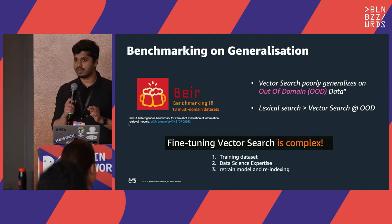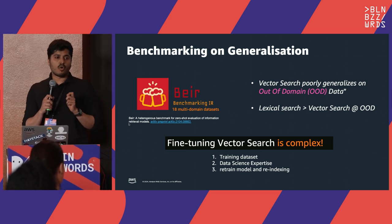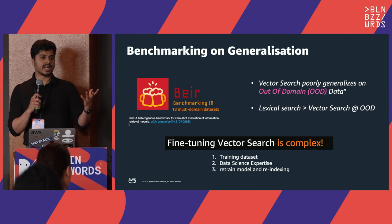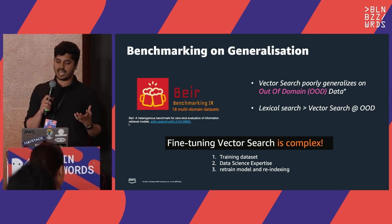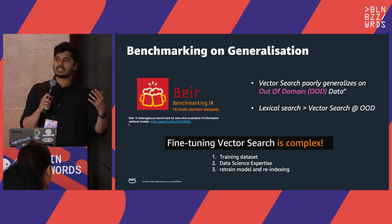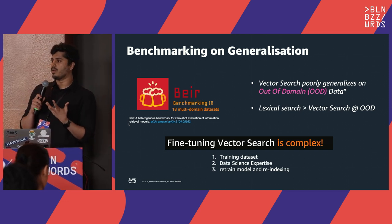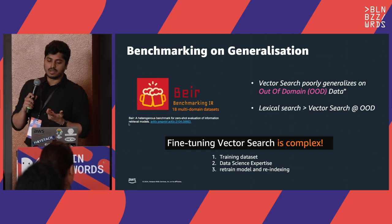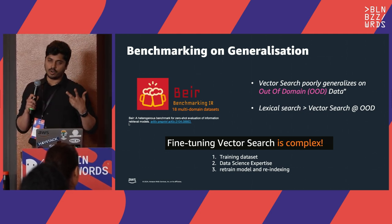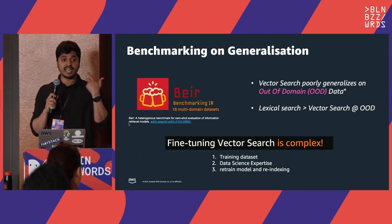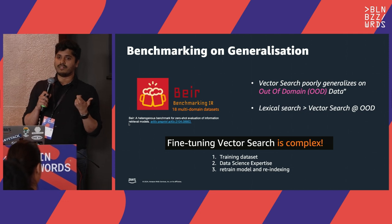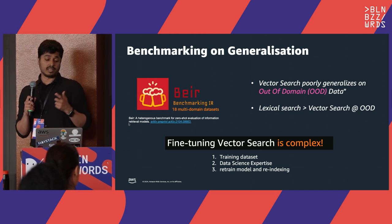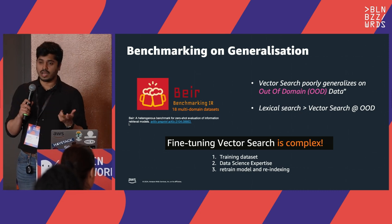Vector search works great, but it needs fine-tuning. Fine-tuning requires creating a synthetic dataset — a big training dataset either from search logs or generated using large language models. You need a data science team to train a machine learning model from scratch or fine-tune a pre-trained model. And finally, you have to retrain your model as new documents arrive, which means re-indexing all documents to new vectors from the retrained model. Fine-tuning vector search is complex to get the exact usefulness of vector search results.